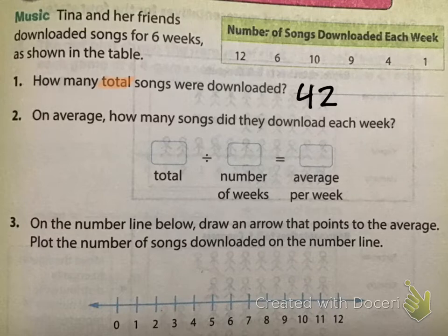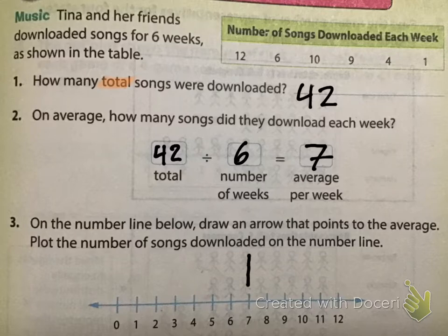On average, we're going to come to see this word, how many songs did they download each week? So we're going to put our total number of songs and the total number of weeks that they downloaded for. And we find out that they downloaded an average of seven songs per week.